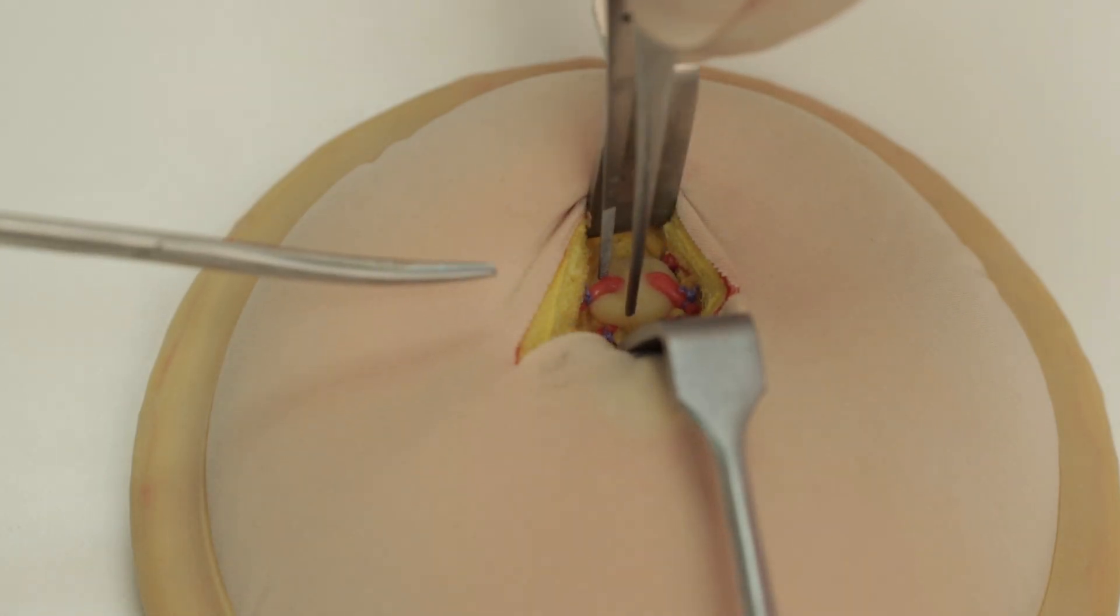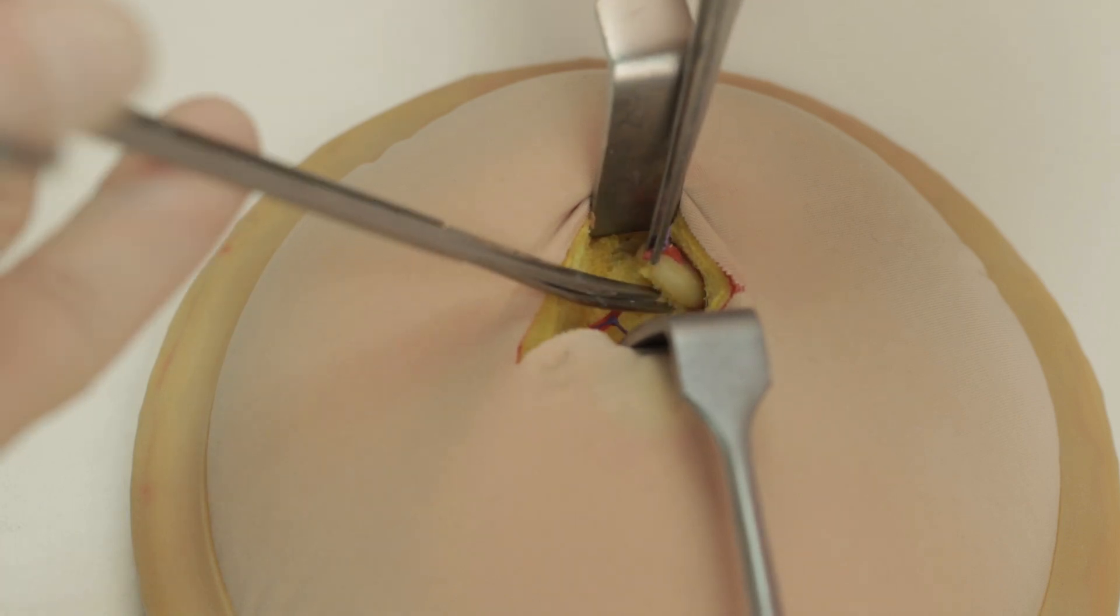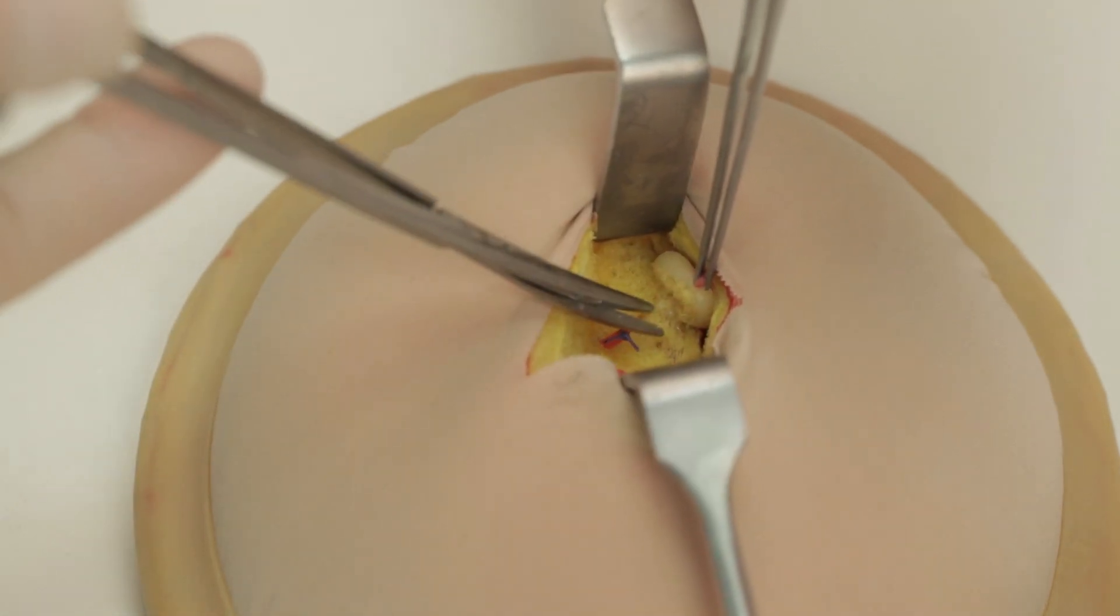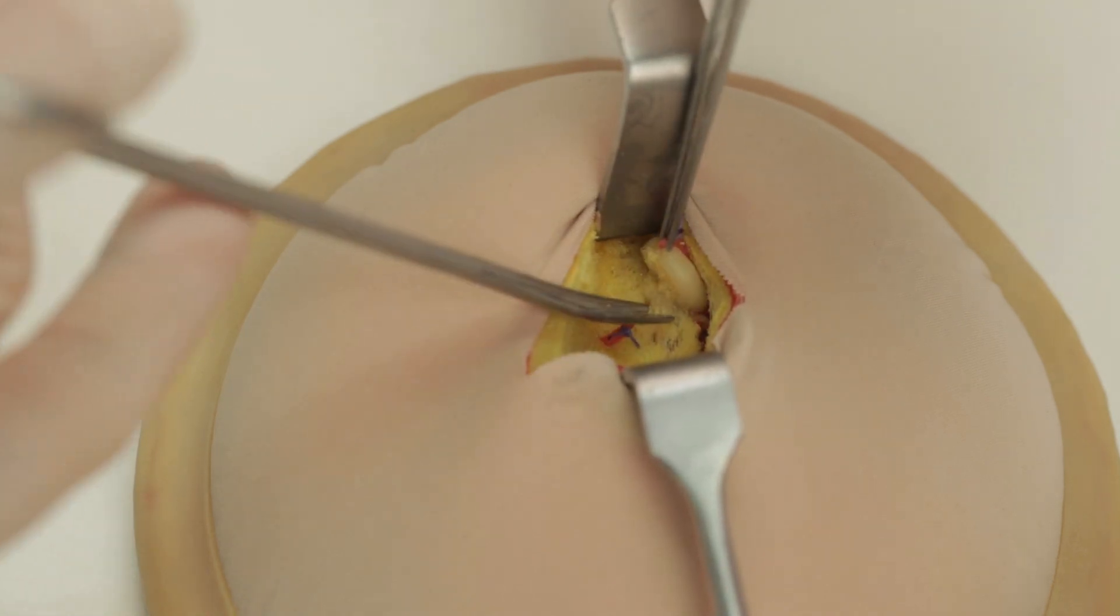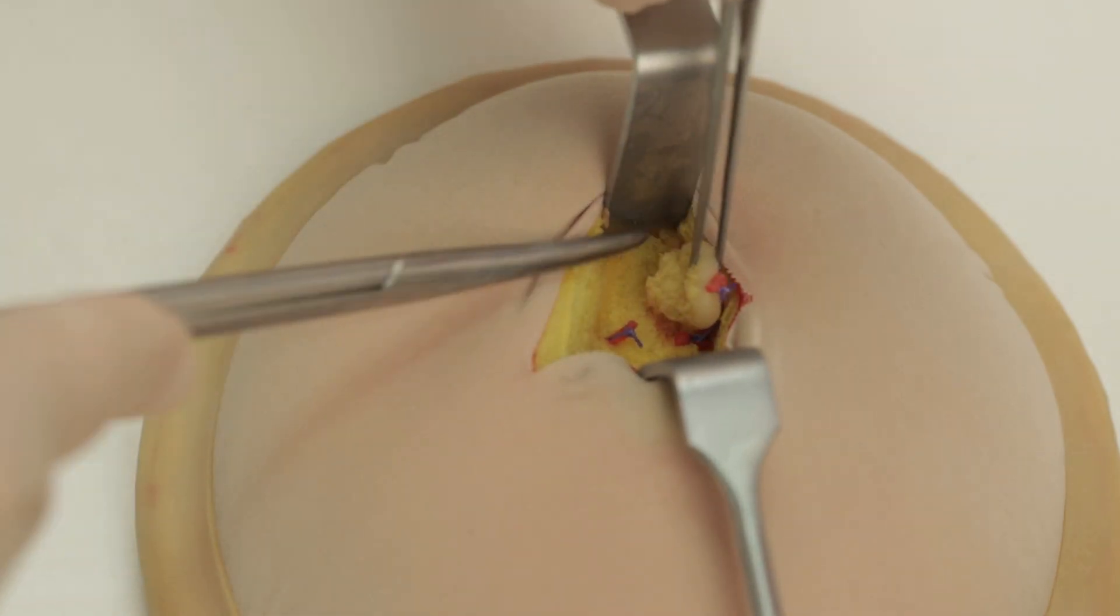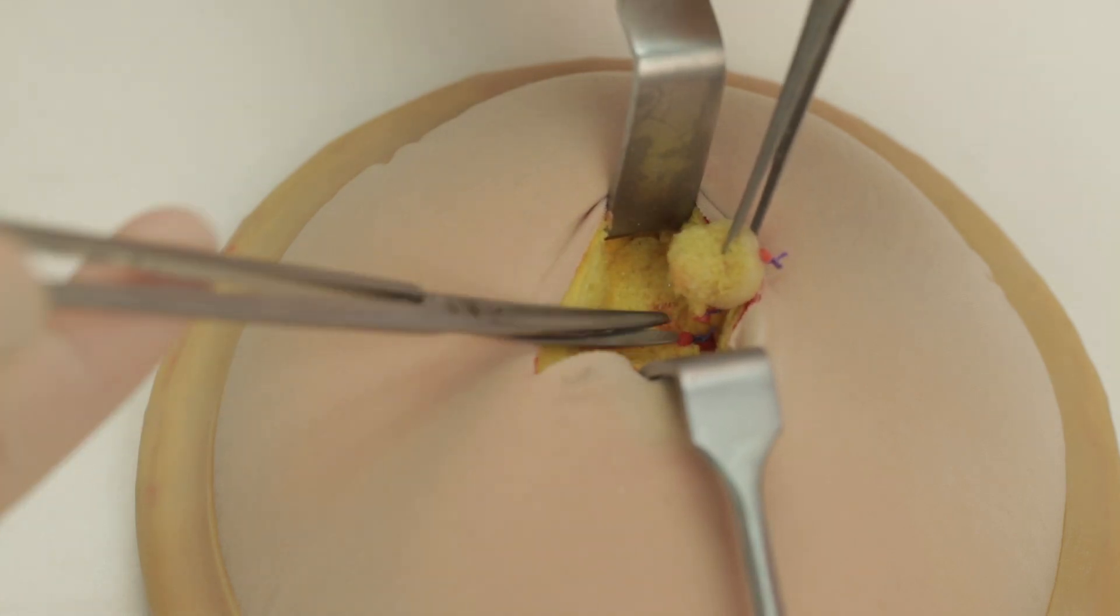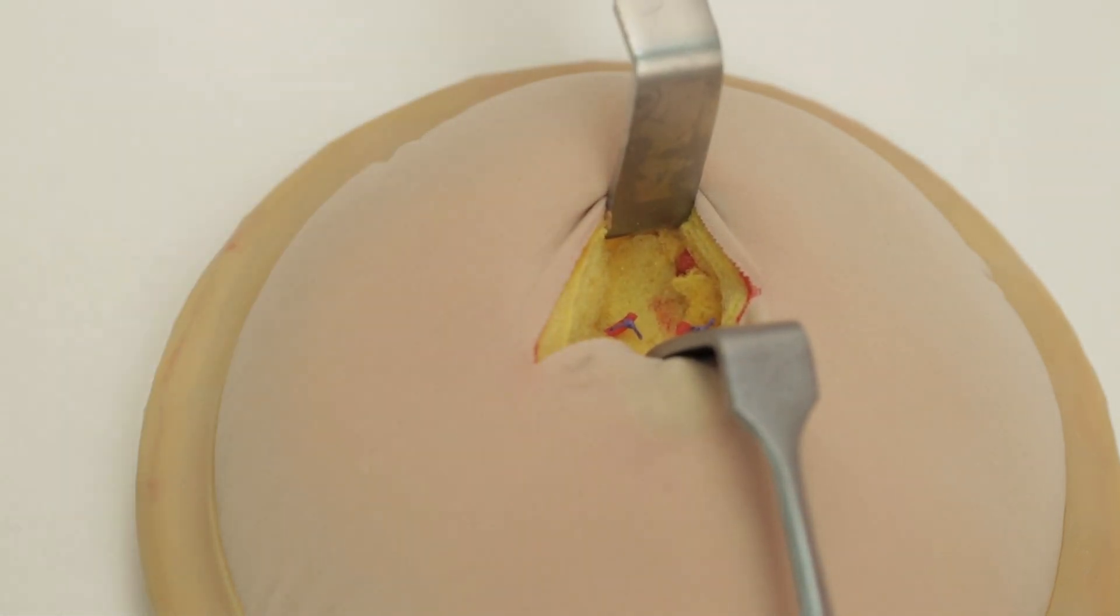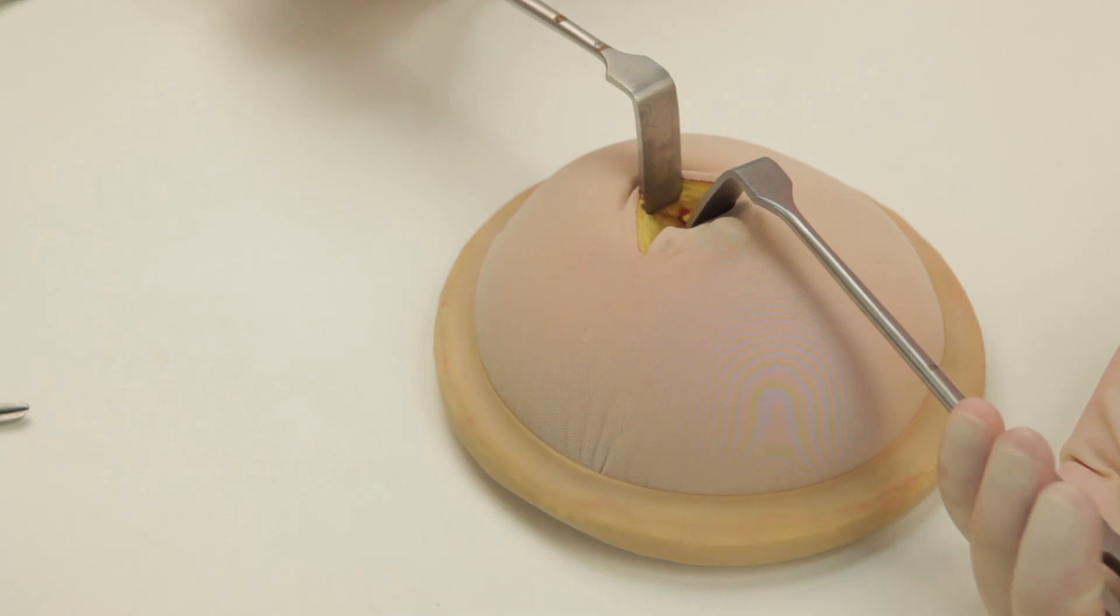It may be appropriate to grasp the lesion with forceps such as Alice forceps or Littlewood's forceps. Remove the lesion by freeing it from its posterior attachments. Remember that in reality, all lesions removed should be sent for histological analysis.